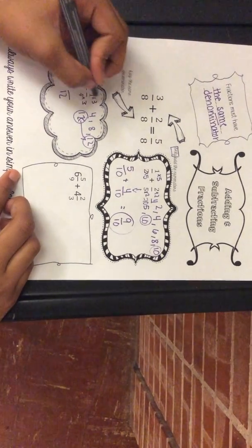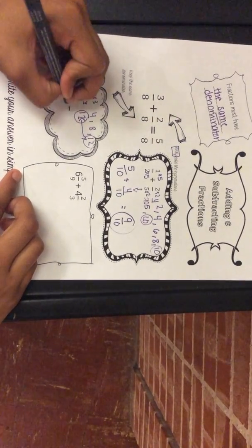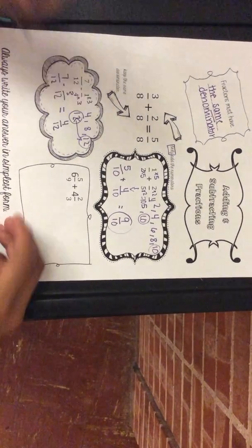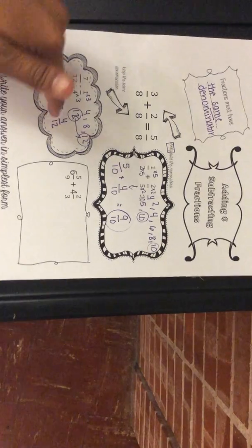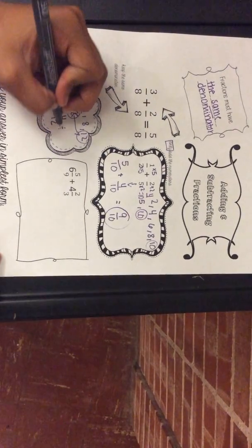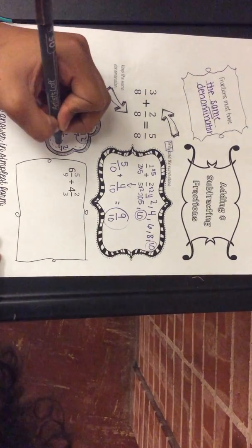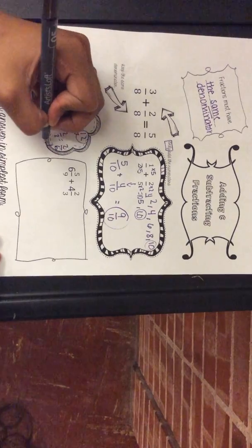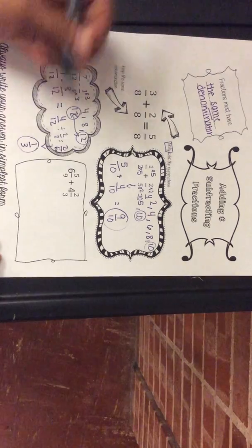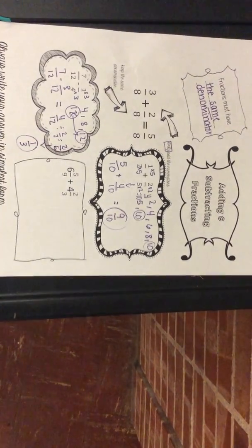Since you multiply by three, one times three equals three, so that fraction becomes three over twelve. Seven over twelve minus three over twelve equals four over twelve, which can be simplified. Four divided by two equals two and twelve divided by two equals six, giving two over six. That simplifies further to one third, because two divided by two is one and six divided by two is three. Your answer is one third.